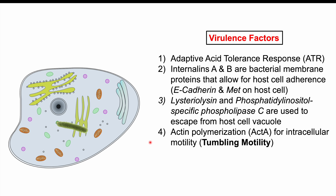Listeria is a motile bacteria that uses a protein called ActA to undergo actin polymerization, exploiting the host cell's actin cytoskeleton for intracellular motility. The term for this movement in Listeria monocytogenes is tumbling motility — an important point for testing purposes. Using phospholipase C, it can also burrow out of the host cell and enter adjacent cells via the same mechanism, spreading infection between host cells.